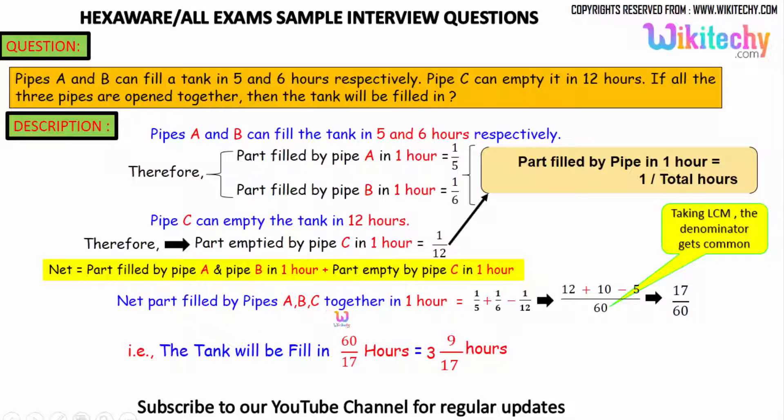The net part filled by pipes A, B, and C together is equal to 1/5 plus 1/6 minus 1/12. Taking LCM 60, you get 12 plus 10 minus 5. You got 17/60. So, reversing it, the tank will be filled in 60/17 hours. This is the standard for this kind of problem. You got 3 9/17 hours.